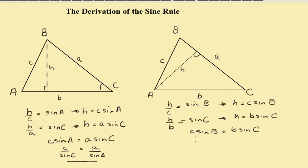Dividing both sides again, we can see that C over sine C equals B over sine B.